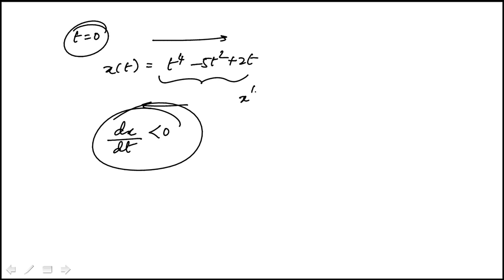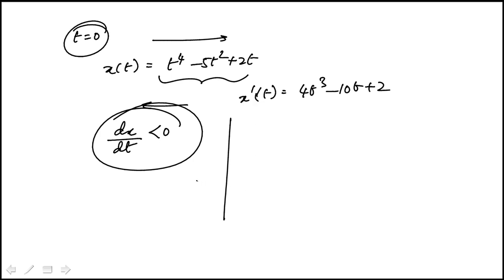So I'm going to take the derivative of t cubed minus 10t plus 2, and I just need to find, in the interval t greater than or equal to 0, where this derivative is negative.